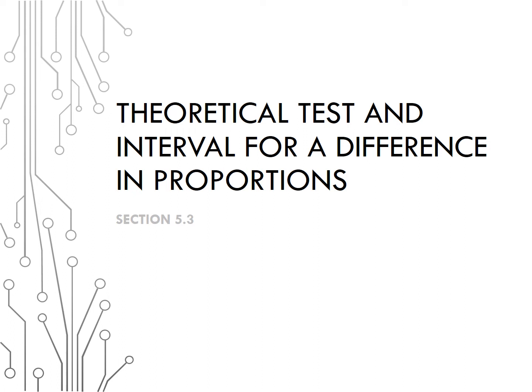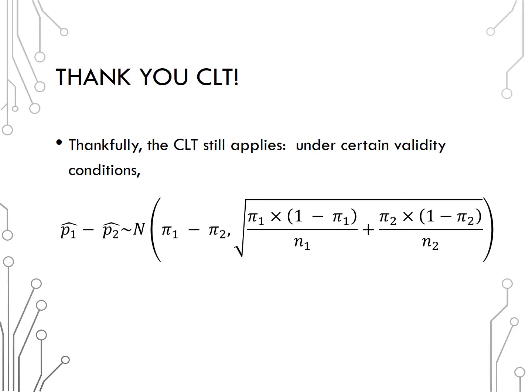The central limit theorem is here to rescue us. The central limit theorem says that under certain validity conditions, the difference in sample proportions will be distributed normally, centered at pi 1 minus pi 2, with standard deviation root pi 1 times 1 minus pi 1 over n1, plus pi 2 times 1 minus pi 2 over n2.